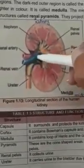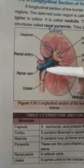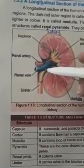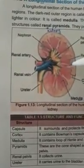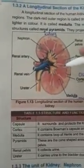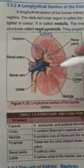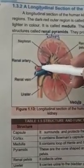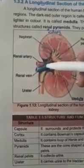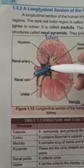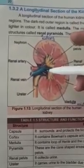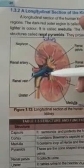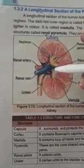The renal cortex, renal medulla, and renal pyramids are the main structural parts. The blue vessel is the renal vein, by which deoxygenated blood goes from the kidney towards the heart. The red vessel is the renal artery, which carries oxygenated blood from the heart towards the kidney.